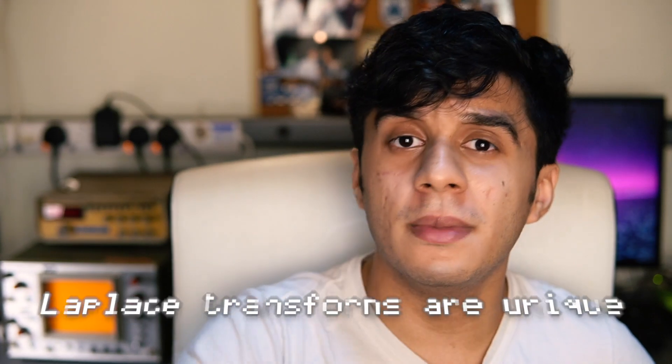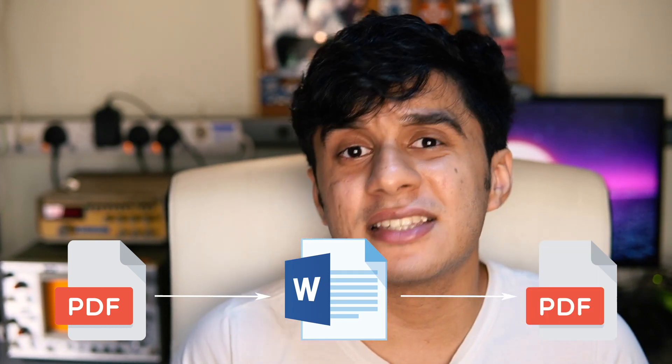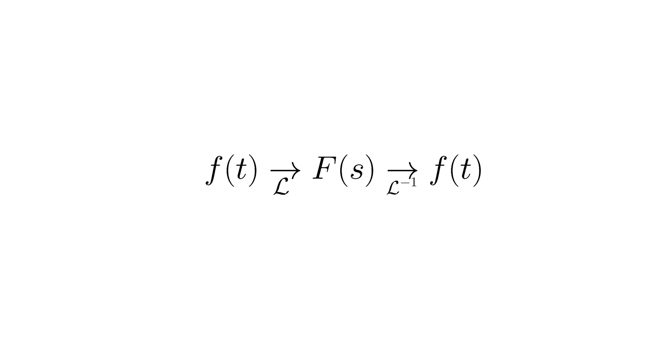The third very useful property is that Laplace transforms are unique: there exists only one Laplace transform for every function. This means solving a problem in the transformed s-domain is equivalent to solving it in the time domain, and an inverse Laplace transform can bring you back. A useful analogy: if you have a PDF you need to edit, you convert it to a Word document, make your edits, then convert it back. Similarly, if an expression in the time domain is difficult to solve, you Laplace transform it into the s-domain, solve it, then inverse Laplace transform back.